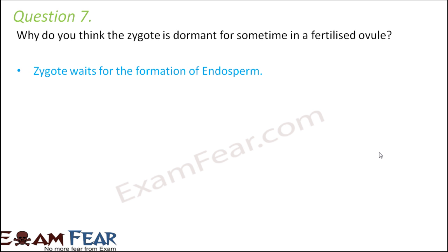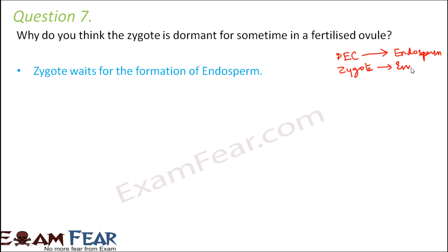The zygote waits for the formation of endosperm. The two things formed inside are the primary endosperm cell and the zygote. Over a period of time after fertilization, the primary endosperm cell develops into endosperm and the zygote develops into embryo. For the zygote to develop into embryo, it needs nutrition, and that nutrition is provided by the endosperm. So the zygote waits so that the endosperm is first formed. Once the endosperm is formed, it provides nourishment and the zygote starts its development.